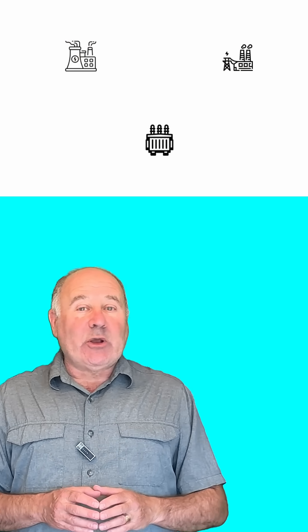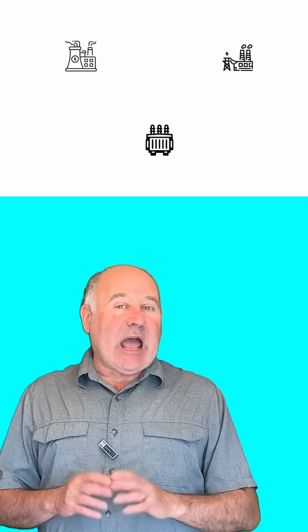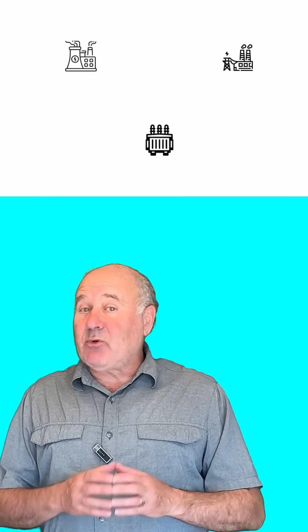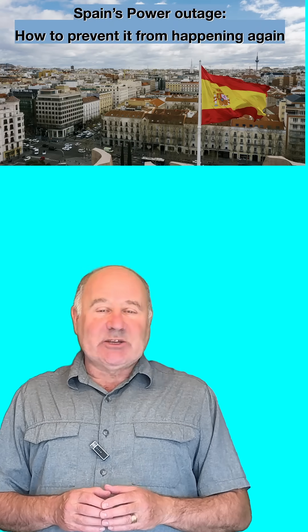So that's why grid operators shut the grid down rather than allowing the frequencies to get out of control. It's easier to bring it back up if you shut things down before equipment gets damaged. If you're interested in what the Spanish can do to prevent a power outage like this from happening again, I recommend you watch my full video, which is linked to below.